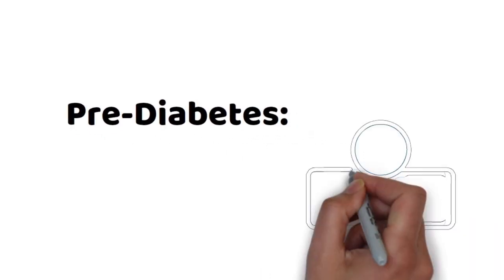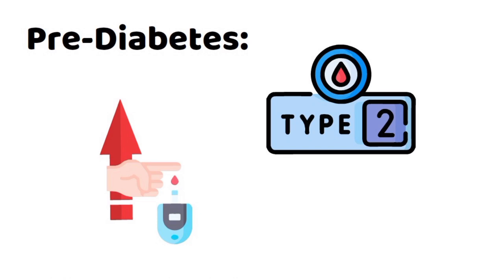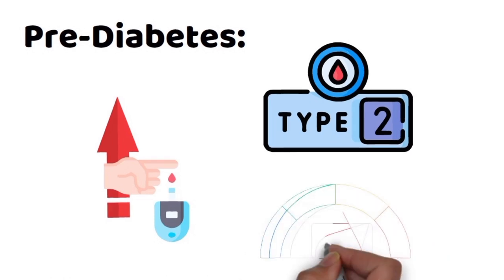Prediabetes is a precursor to type 2 diabetes. In this condition, blood glucose levels are higher than normal, but not yet at the diabetes threshold.